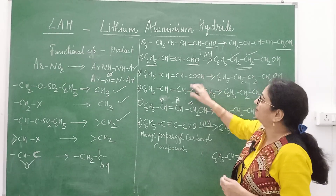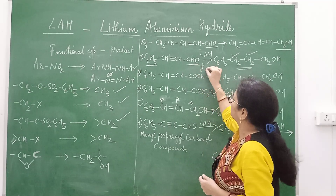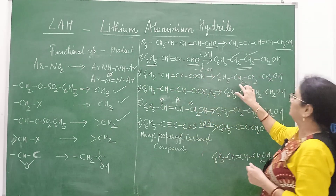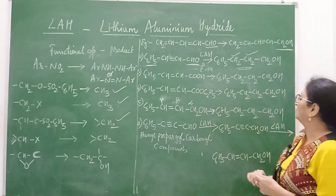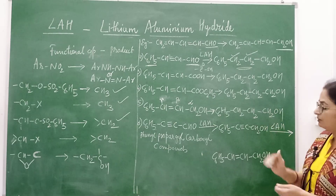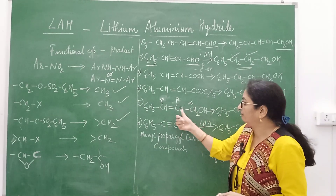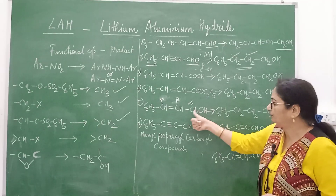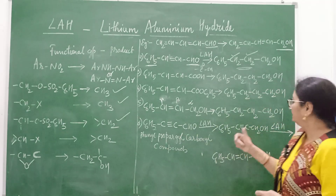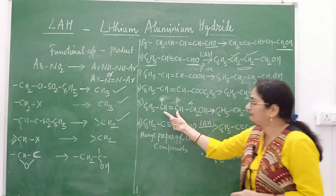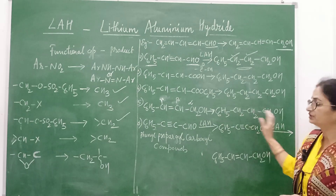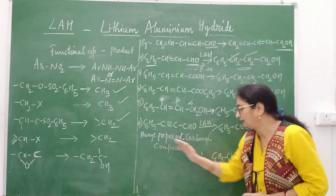Students, note that if a compound has a double bond directly attached to a phenyl group on one side and a carbonyl group on the other side, such double bonds will get reduced by lithium aluminium hydride. Similarly, if an acid group is present on one side and a phenyl group on the other side, the double bond between them also gets reduced to CH2-CH2. Considering alpha-beta-gamma carbon positions: if the double bond is directly attached to the phenyl group, it also gets reduced to CH2-CH2, while the functional group remains as it is.